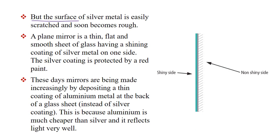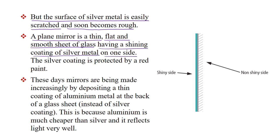But the surface of silver metal is easily scratched and soon becomes rough. Silver metal का surface बहुत जल्दी scratch हो जाता है और rough हो जाता है. इसलिए a plain mirror is a thin, flat and smooth sheet of glass, having a shining coating of silver metal on one side, and the silver coating is protected by a red paint.